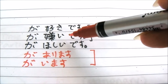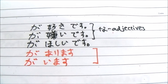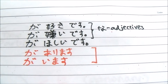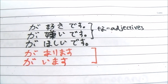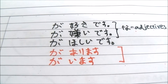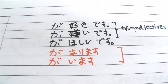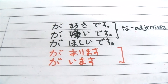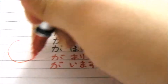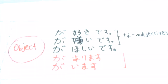Remember that 嫌い (kirai) is a な adjective — that's an exception. And が欲しい (ga hoshi desu), があります (ga arimasu), and がいます (ga imasu) can be grouped together because they have the same meaning, just that one is for living things and one is for non-living things. You'll notice that in front of が is probably an object — I like something, I dislike something, I want something, there is something.